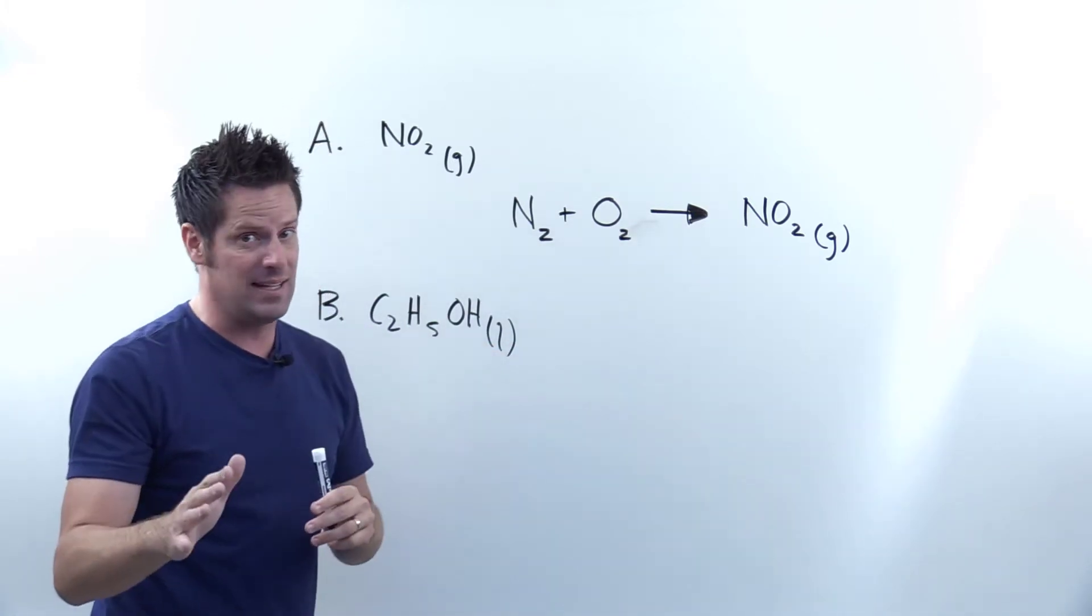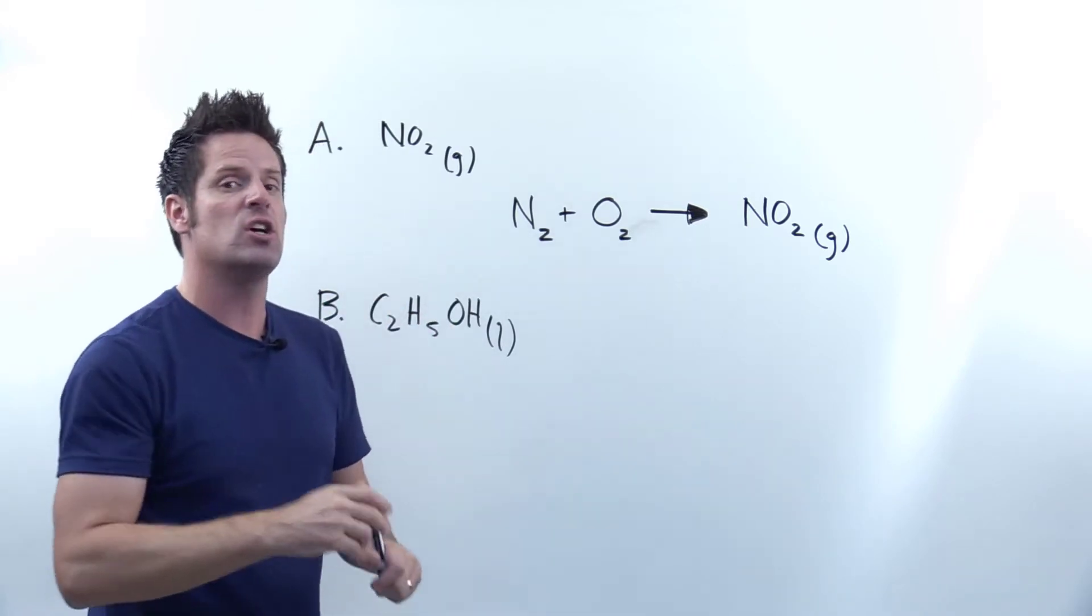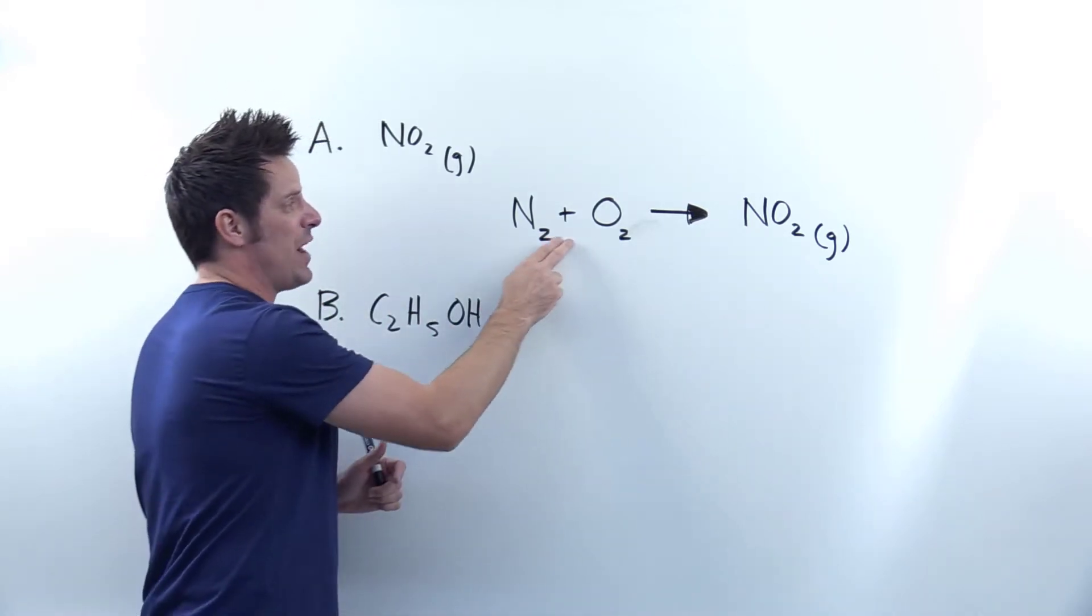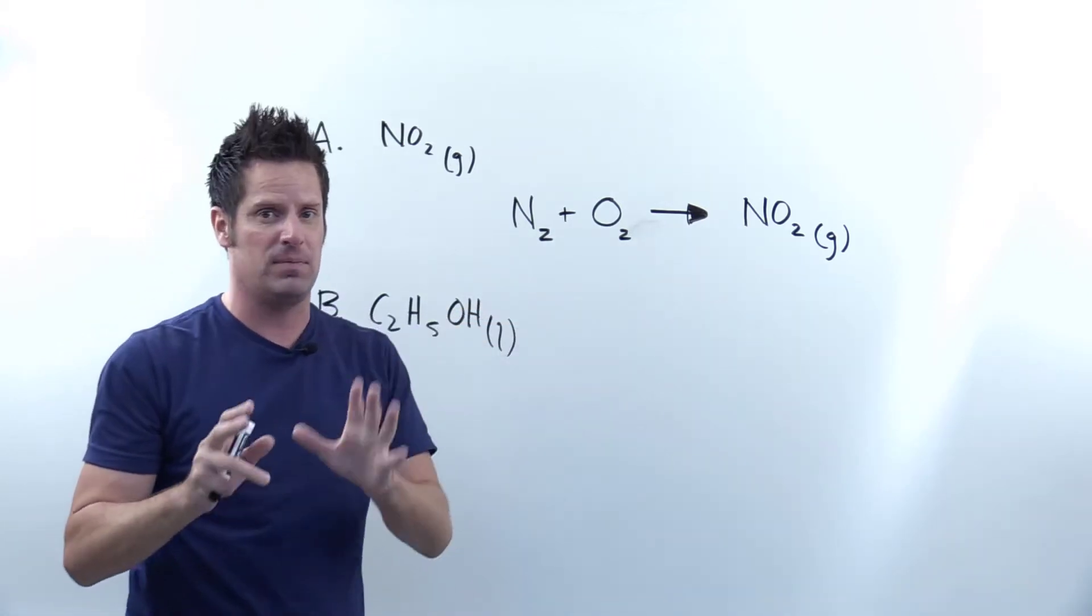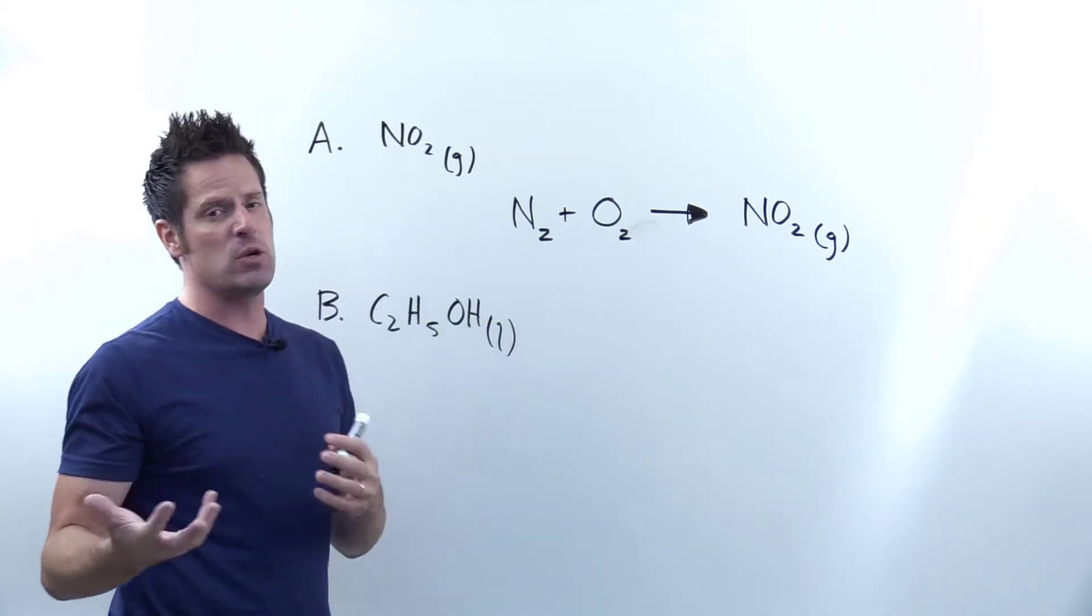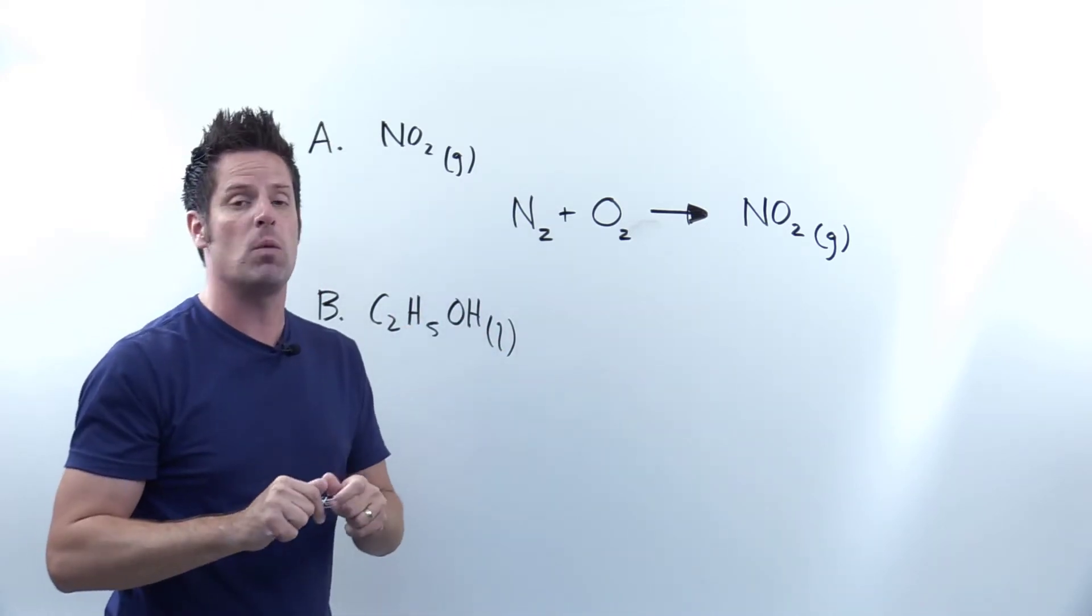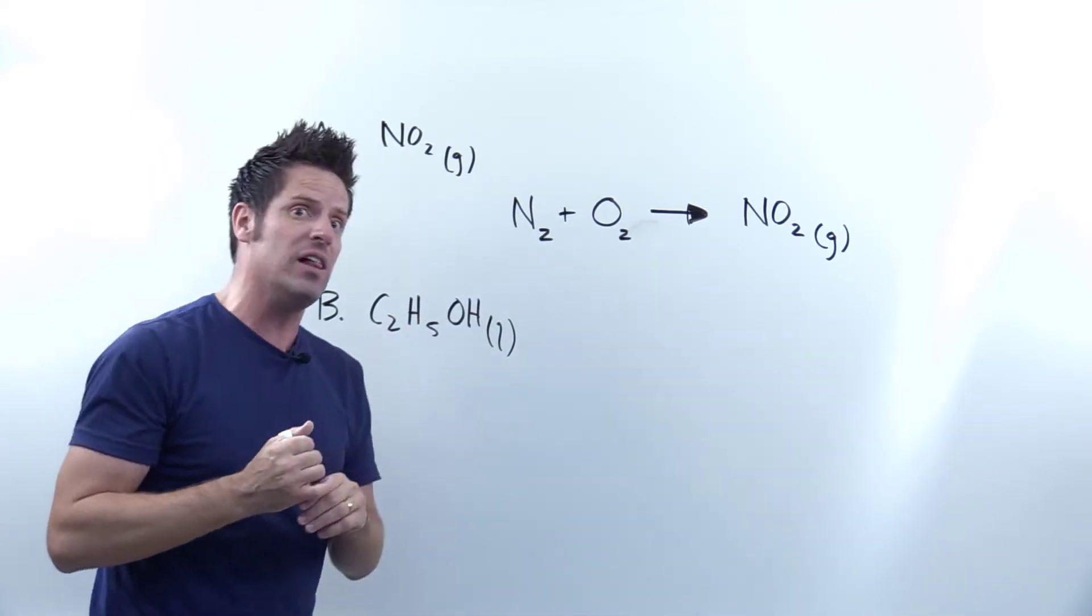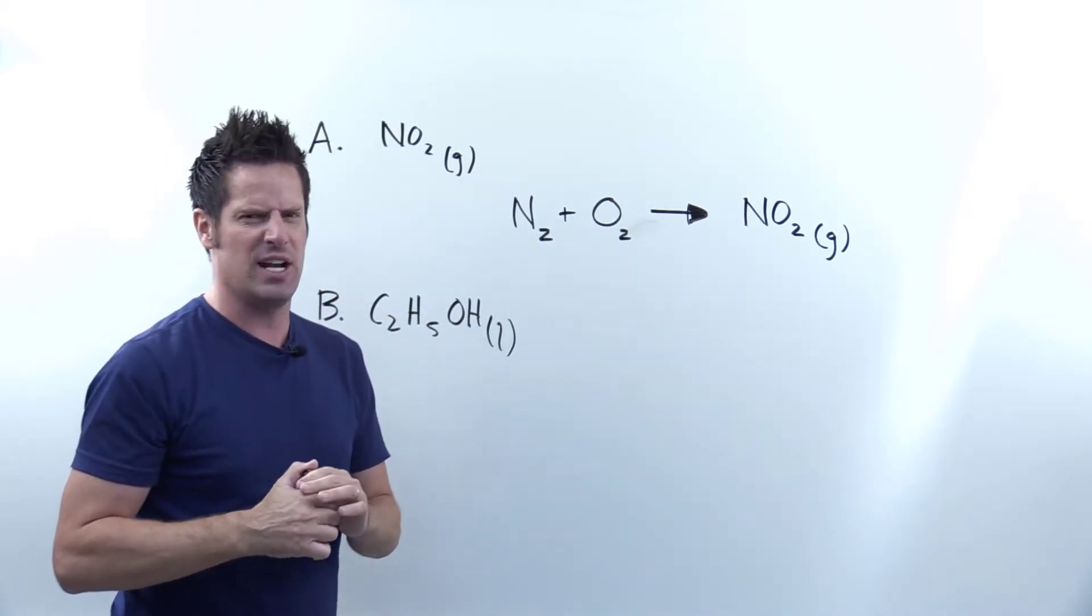Now this means that contrary to our sort of typical way of balancing equations, we often do have to use fractions as coefficients here on the left in order to keep this as a number one. Does that make sense? Now I know we're not accustomed to using fractions as coefficients sometimes, but we definitely will at least have to entertain that as a possibility in this type of scenario.